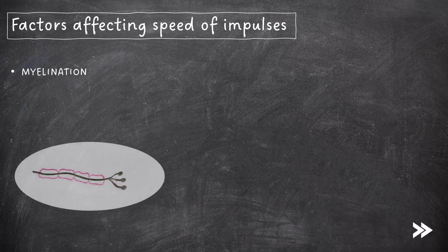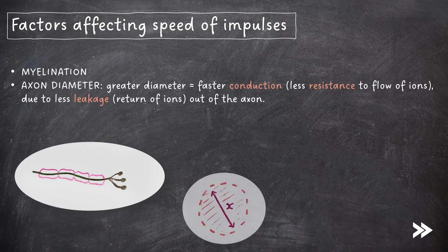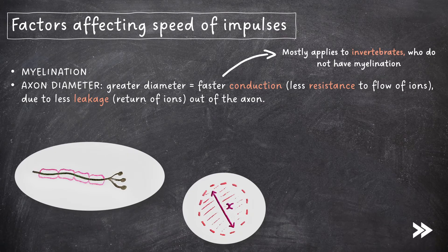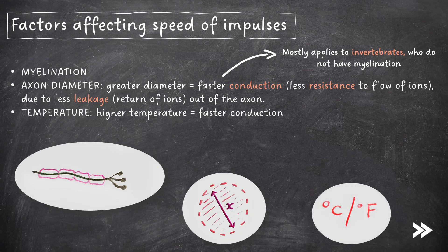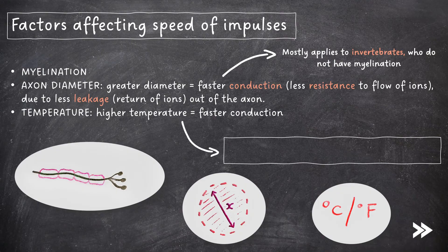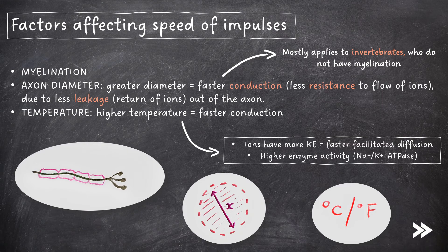Finally, we need to consider factors that affect the speed of impulses. First of all we have myelination — if a neuron is myelinated, the action potential travels along the neuron at a faster speed due to saltatory conduction. Then we have axon diameter: the greater the axon diameter, the faster the speed of conduction due to less leakage — i.e. return of ions out of the axon — and less resistance to the flow of ions. Note that this mostly applies to invertebrates who do not have myelination. And finally, temperature also affects the speed of conduction. The higher the temperature, the faster the speed of conduction, because ions have more kinetic energy, meaning a faster rate of facilitated diffusion into and out of the axon. Also, there is higher enzyme activity, such as in the sodium-potassium pump — which is actually an enzyme, hence it often being referred to as an Na+, K+, ATPase enzyme.